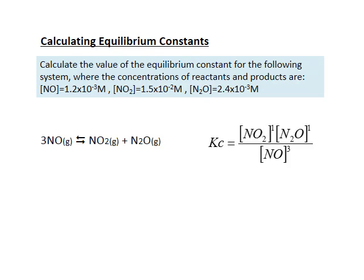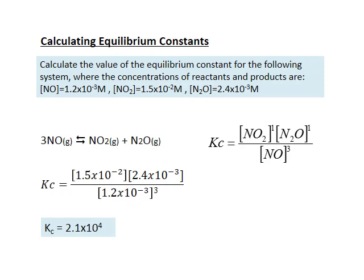I first need to write out my equilibrium constant expression - products over reactants raised to exponents. When I take all the data I've been given in the problem and plug it in the appropriate place, it looks like this. When I simplify by plugging those numbers through my calculator, I got a value of 2.1 times 10 to the 4th - a relatively large number.